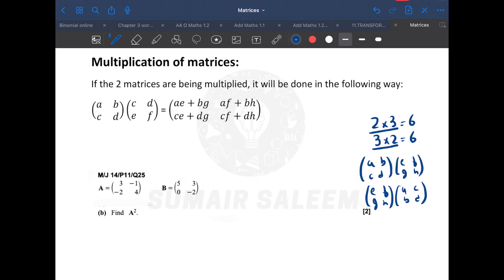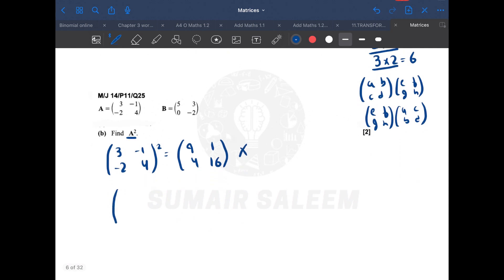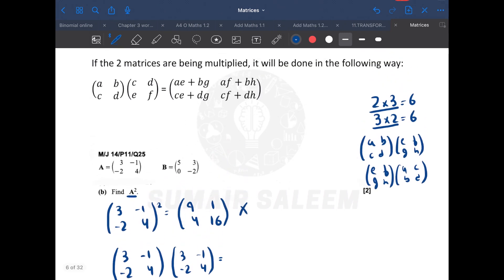Now, a major mistake. Let's suppose A squared. So what's the mistake they made? They write the answer is 9, 1, 4, and 16. Please guys, I request you, don't make such a mistake. It's wrong. When it's A squared, you have to do this separately and then multiply them. Let me teach you the multiplication of matrices now.